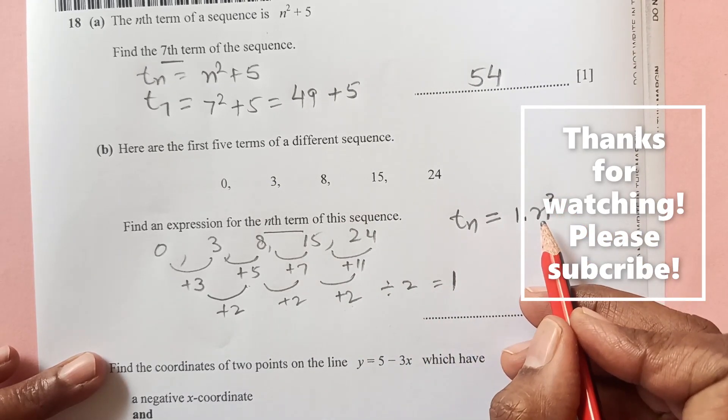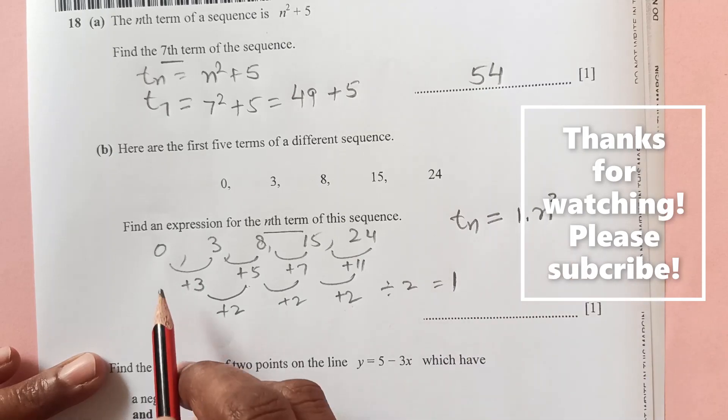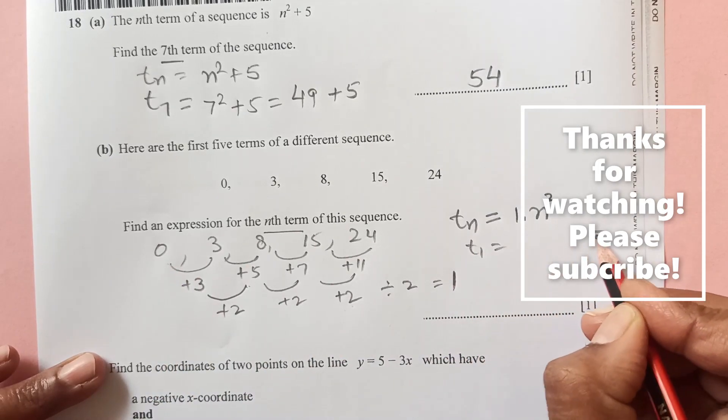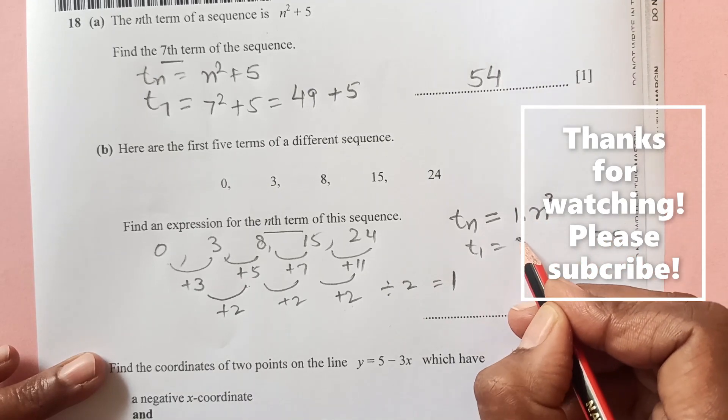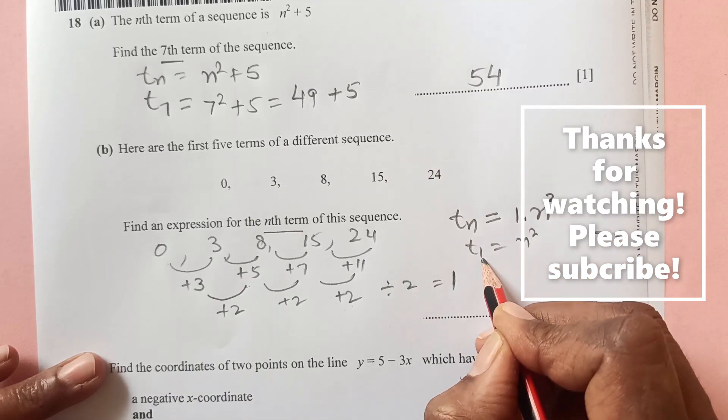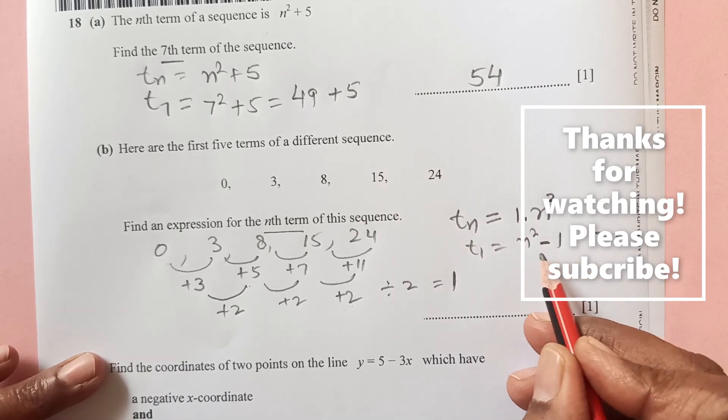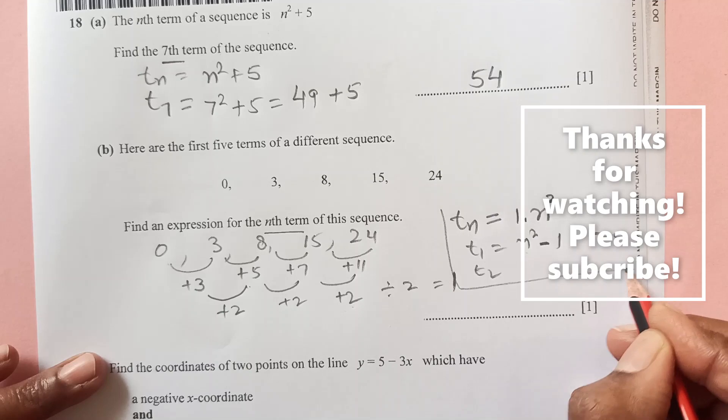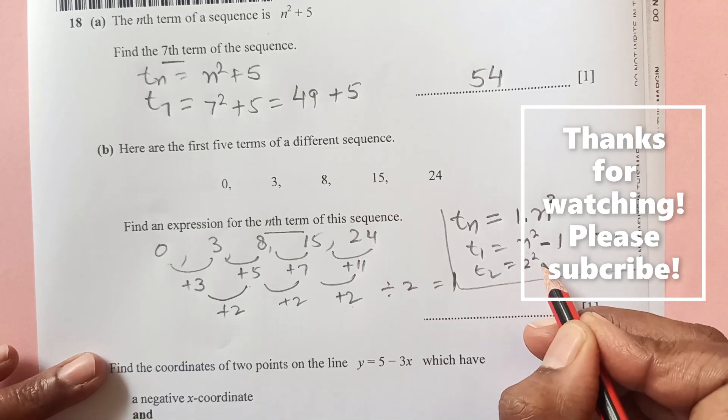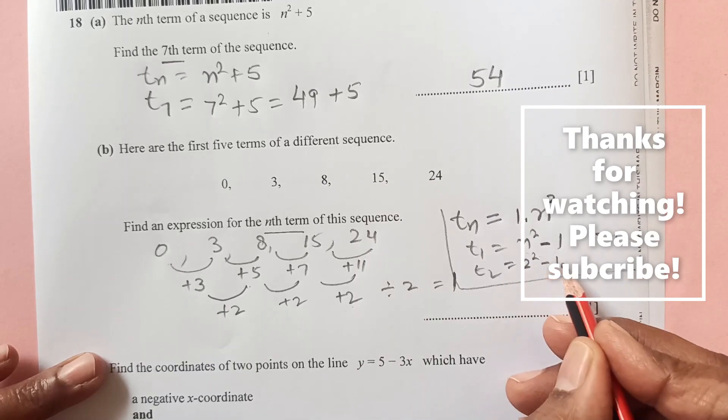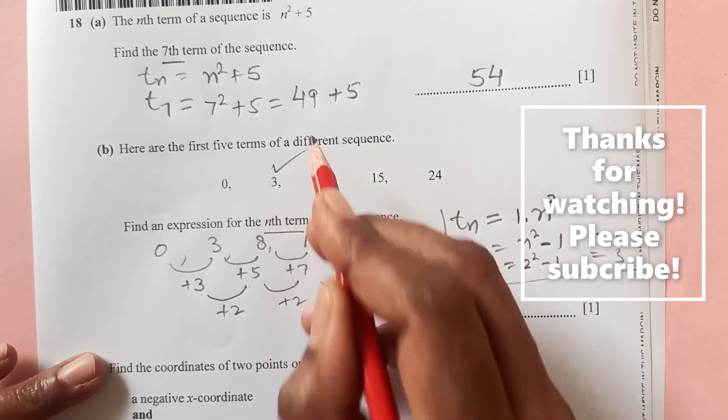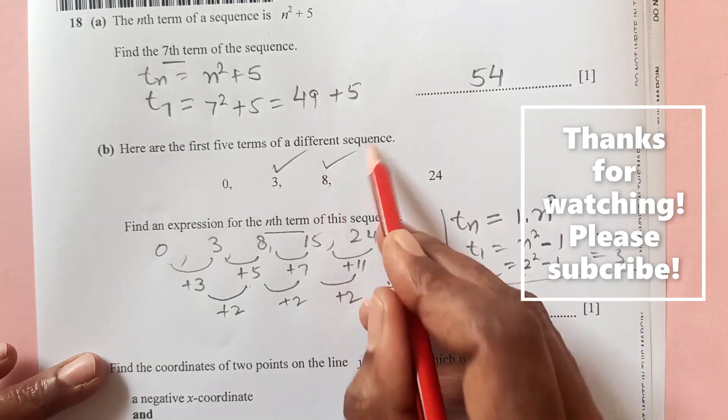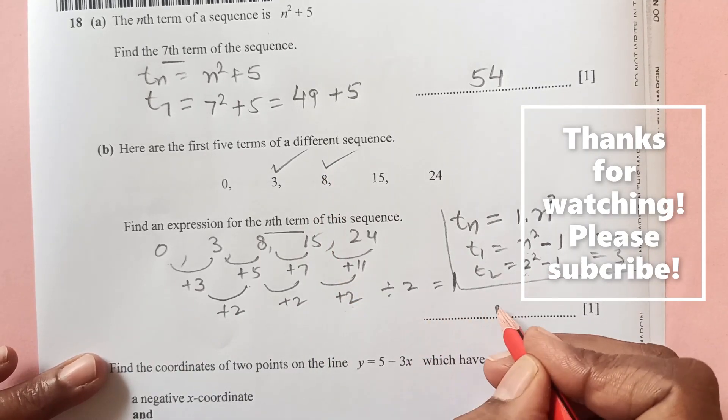Then we will see what we are going to add and subtract. So this is 0, the first term, that means t_1 should be 0. So that means n squared, 1 squared, if we put 1 minus 1, that will become 0. Similarly, if you take here t_2, that is going to be 2 squared minus 1, that is 4, 4 minus 1 is 3, which is correct. And for the third one, 3 squared is 9, 9 minus 1 is 8, so it's working. So the nth term is going to be n squared minus 1, right.